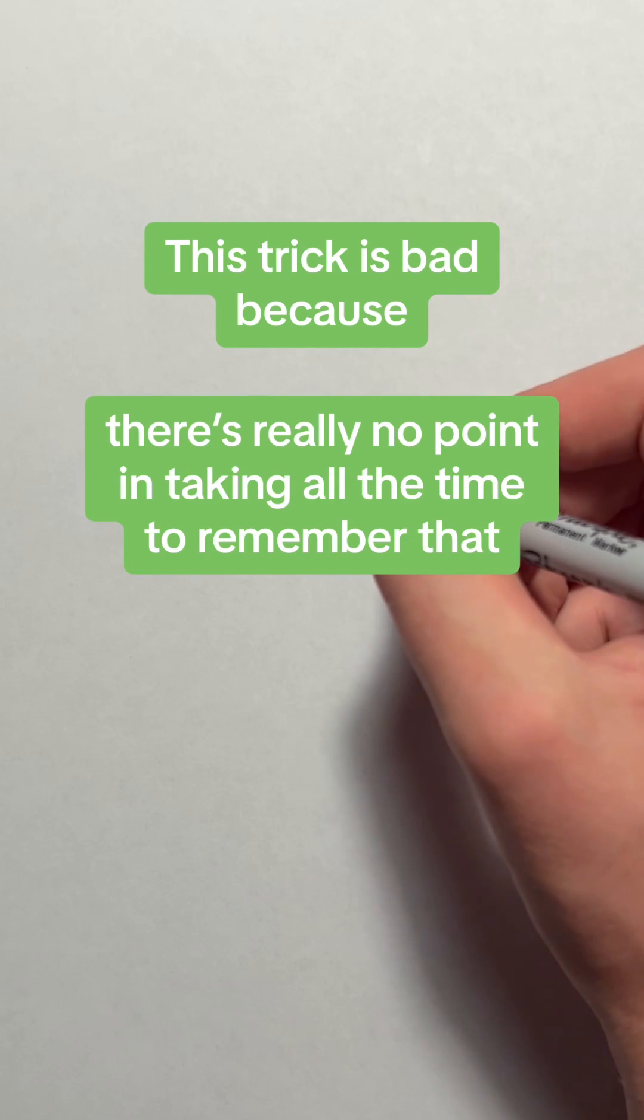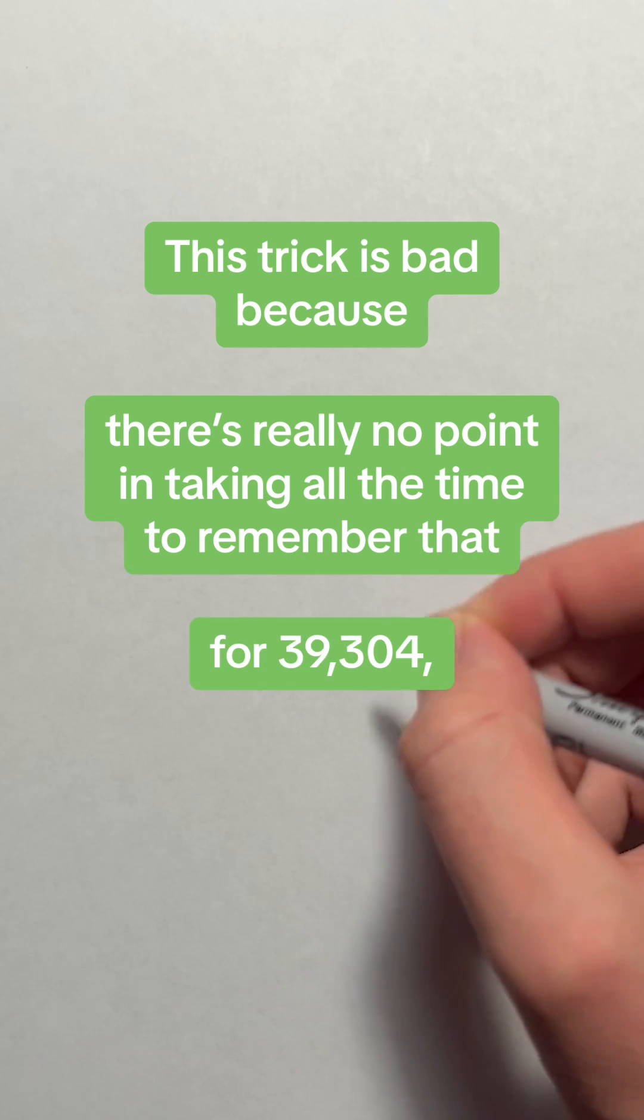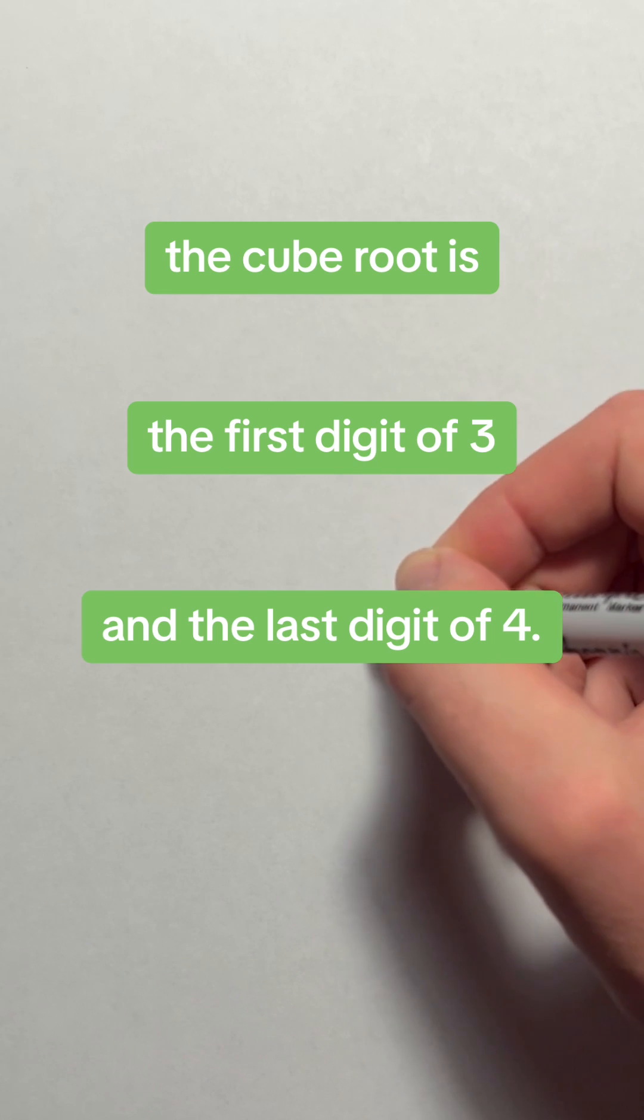This trick is bad because there's really no point in taking all the time to remember that for 39,304, the cube root is the first digit of 3 and the last digit of 4.